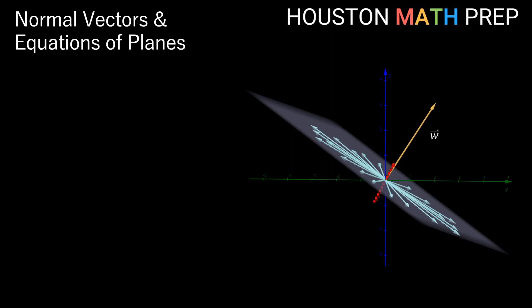Let's say we start out with some vector in 3D space with its initial point at the origin — here I've called my vector w. That vector w is orthogonal to some plane. We know orthogonal is just a vector word for perpendicular. We also have another word that describes a vector that is orthogonal to another object in space when it points straight out at a 90-degree angle — we say that vector is normal to the plane, and when a vector is normal to some other object in space, sometimes we write it in a special way that gives us that information up front.